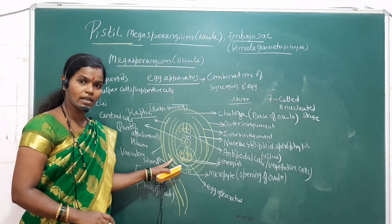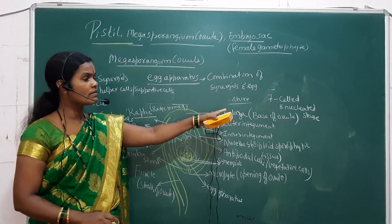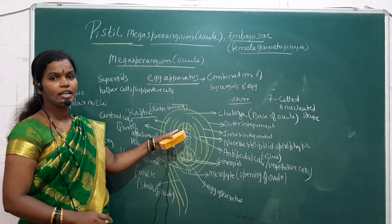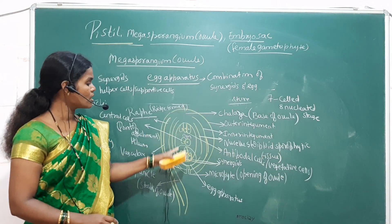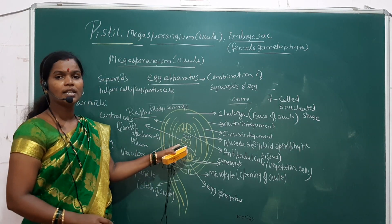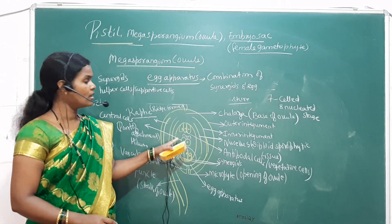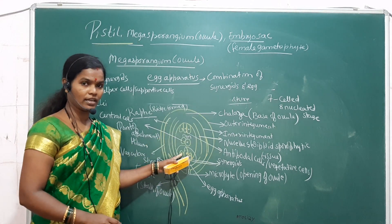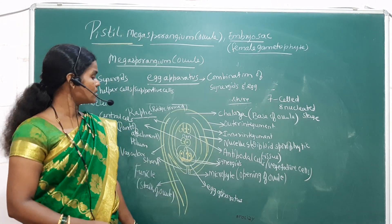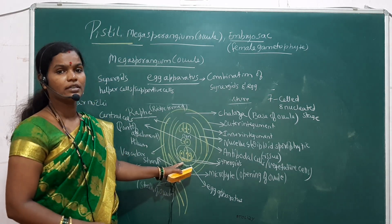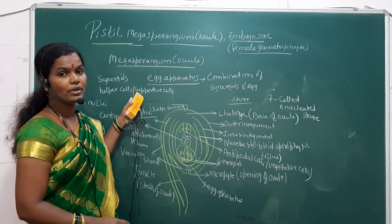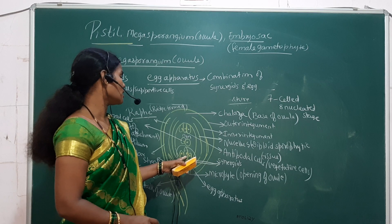To recap: the embryo sac is a bag-like structure with seven cells and an eight-nucleated stage. There is a presence of antipodal cells towards the chalaza, synergids and the filiform apparatus towards the micropyle, and two central cells in the center of the embryo sac. All of these are haploid before fertilization. The egg apparatus consists of the egg and the synergids.